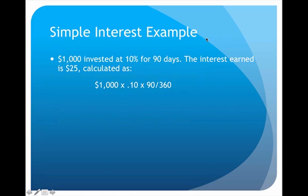For a simple interest example: we're going to invest $1,000 at 10% for 90 days. How much interest would we earn? We would earn $25 in interest. That comes from the simple interest formula: principal of $1,000 times rate of 10% (or .10) times time of 90 out of 360 days. Rounded, that is $25 worth of interest.